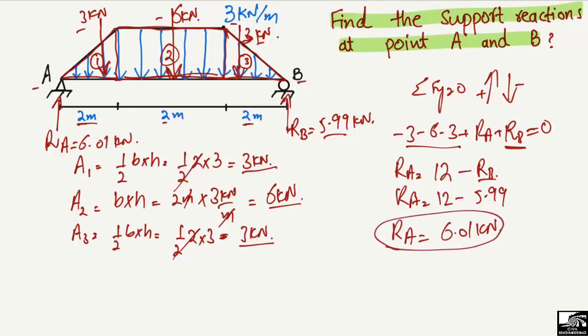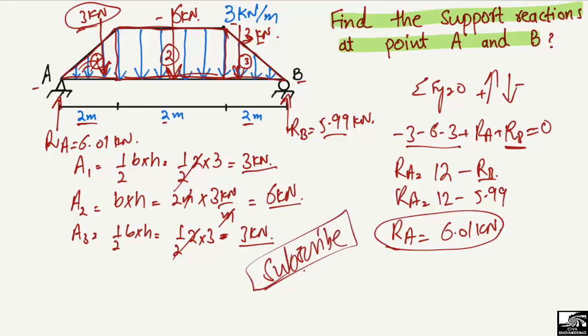So that is how to find the support reactions for a trapezoidal load on a beam. The key steps are: divide the trapezoidal area into three parts (two triangles and one rectangle), find the equivalent load and centroid location for each, then apply moment and force equilibrium. Hope you guys understand — don't forget to subscribe to our channel for daily engineering videos. Thank you for watching.